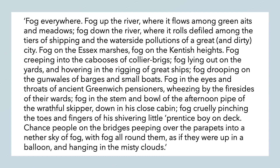Then he says fog creeping into the cabooses of collier brigs. Colliers is associated with collieries — so coal, coal mining. A collier brig was a type of ship that would carry coal. And cabooses are sort of like carriages — little trucks — and the cabooses would go to the collier brig and remove the coal and take it onto the land. So the fog is creeping around these carriages, creeping around the boat itself. It's lying out on the yards and hovering in the rigging of great ships, fog drooping on the gunwales of barges and small boats. The gunwale is the name for the side of a boat — it's called that because it used to be where you would rest your guns.